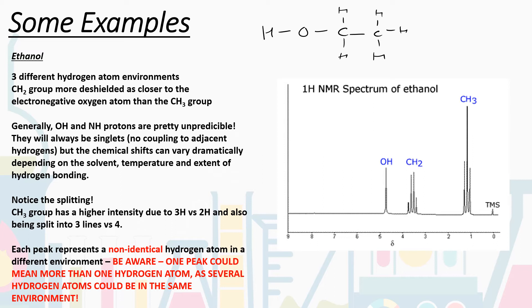Let's look at some examples. First, ethanol, CH₃CH₂OH. There are three different hydrogen environments. There's no symmetry in this molecule — no mirror planes. Each hydrogen environment is different: we have the OH hydrogen, the CH₂ group, and the CH₃ group. Due to free rotation of the CH bonds, the two hydrogens on the CH₂ carbon are in the same environment as each other, and the three hydrogens on the CH₃ are in the same environment as each other, but CH₂ and CH₃ are in different environments.